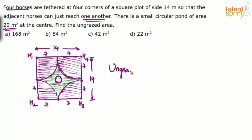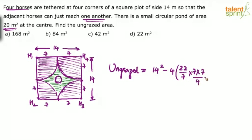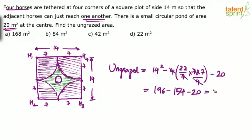So we can say ungrazed area will be equal to area of the square. Now what is area of a square? Side square, 14 square minus area of the circle or four times the area of each quarter. So 4 × πr²/4. Area of a quarter is πr²/4. So 22/7 × r square, radius is seven. Seven into seven divided by four. Four times each quarter minus area of the pond, which is 20. So four and four gets cancelled. Seven and seven gets cancelled. 14 square is 196 minus 22 sevens is 154 minus 20. So 196 minus 174, which is 22. So 22 meters squared is your answer. Option D.